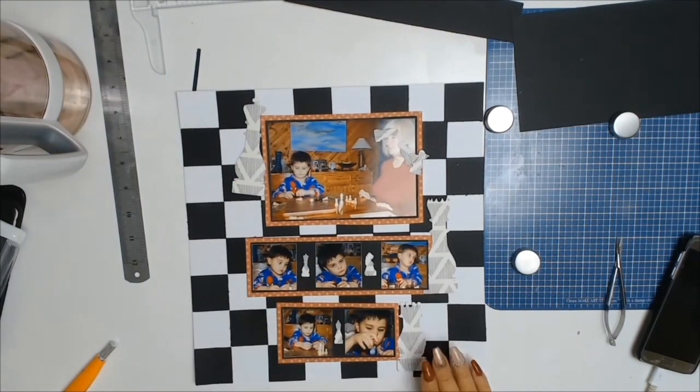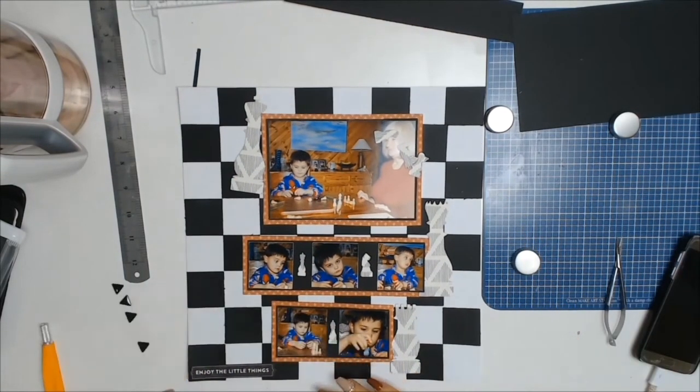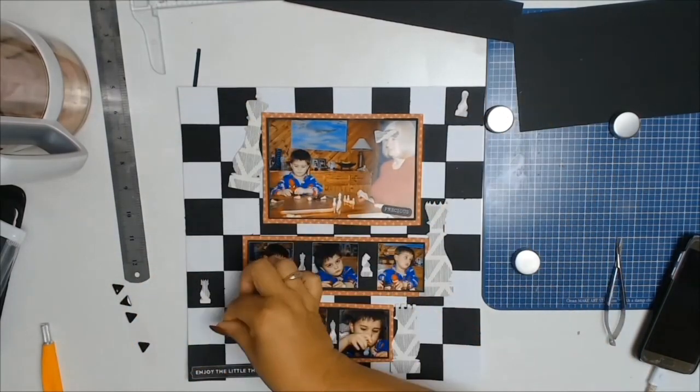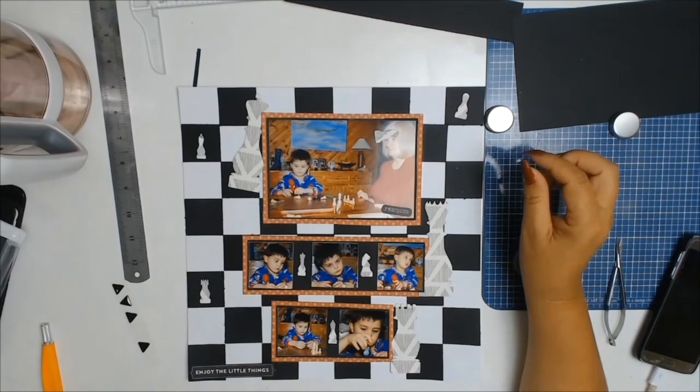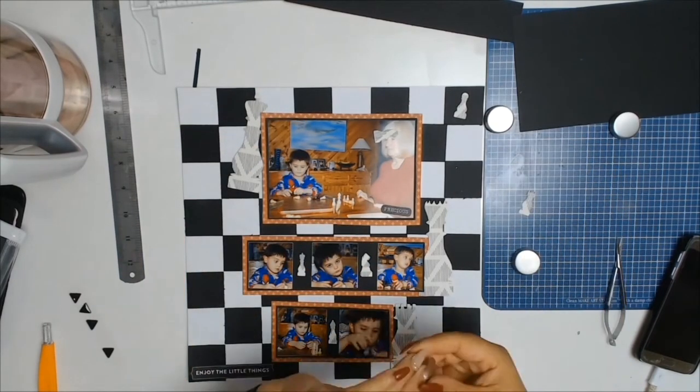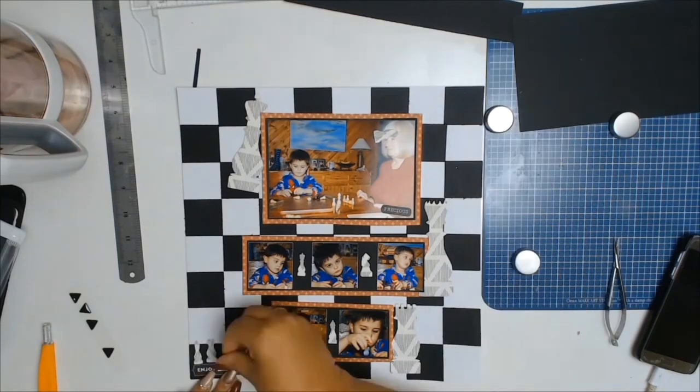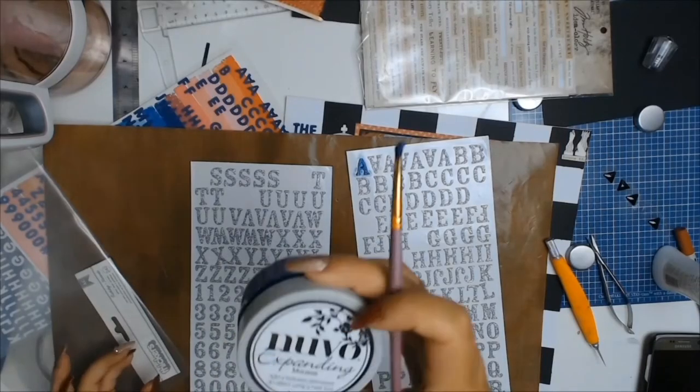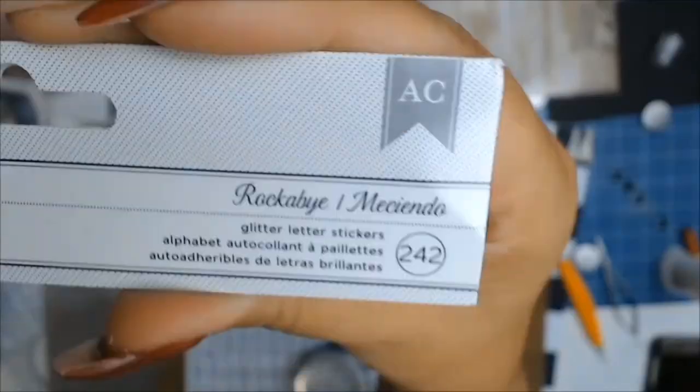So I went to the Silhouette store, I typed in chess and there were these gorgeous chess pieces. So I paid my 59 cents, downloaded it and I cut out all the pieces onto some black and white patterned paper. Now, the title for this page is going to be the many faces of chess because of the expressions on my son's face. I just thought it was very appropriate.